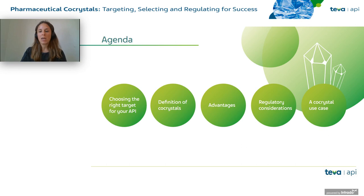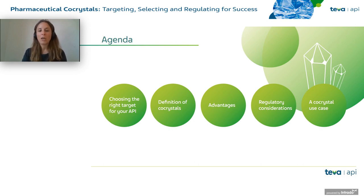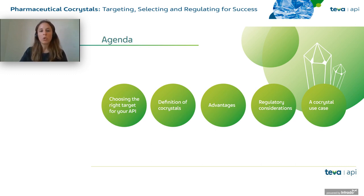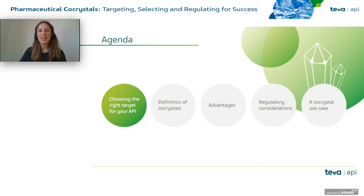Looking at the agenda for today: first, we will talk about choosing the right target for your API. Then we will look at the definition of co-crystals and what it means. Then we will go into the advantages of co-crystals, any regulatory considerations surrounding co-crystals, and finally a use case for co-crystals. Please feel free to put down any questions in the box. Moving over to Ananta — please begin.